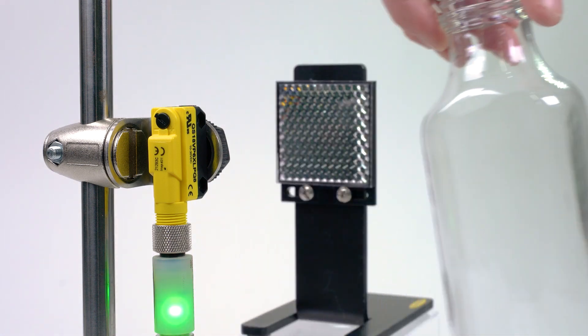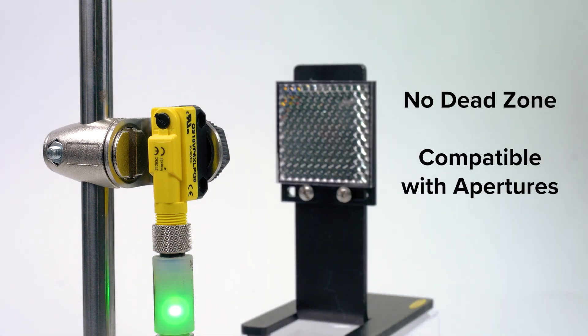Additional benefits include the lack of a dead zone, allowing you to mount the reflector much closer to the sensor, and a compatibility with apertures for smaller object detection.